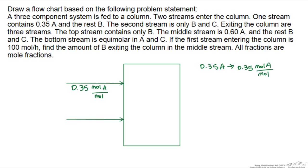If we have 0.35A, and the rest is B, then in order for it to be 100%, this needs to be 0.65B.